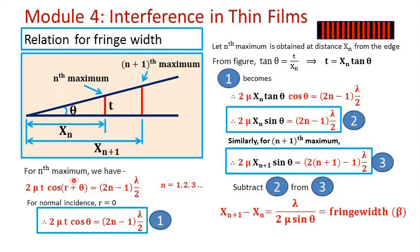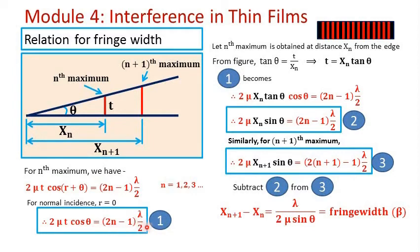For the nth order maximum in the wedge-shape film experiment, we have the condition: 2 mu t cos r plus theta equal to (2n minus 1) lambda by 2, where n equals 1, 2, 3 and so on. For normal incidence, we can write r equal to 0, and this condition for the nth maximum can be written as 2 mu t cos theta equal to (2n minus 1) lambda by 2.